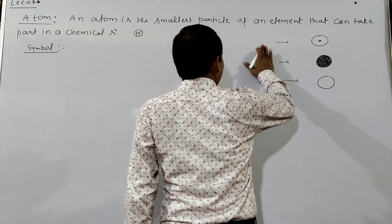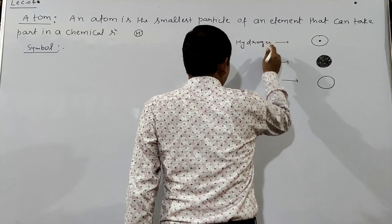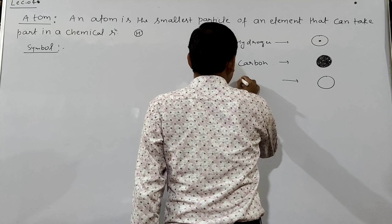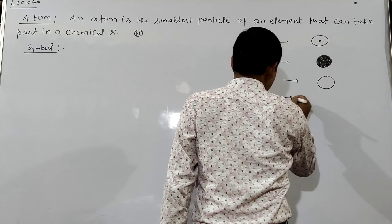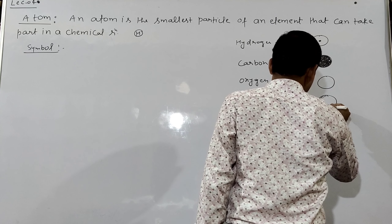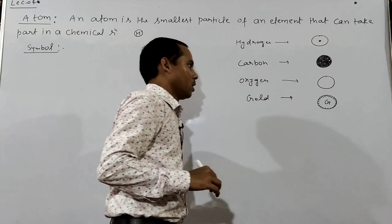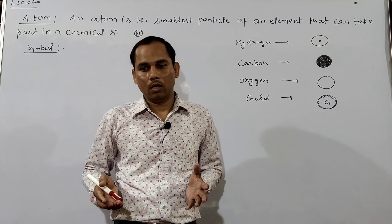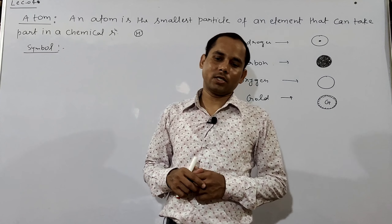So that was hydrogen, and this is carbon — these were the symbols of elements. For oxygen, just a plain circle. For gold, Dalton drew a circle with a 'G' in the middle. However, these symbols were difficult to learn, so they were not used for long. A new scientist came along after Dalton.